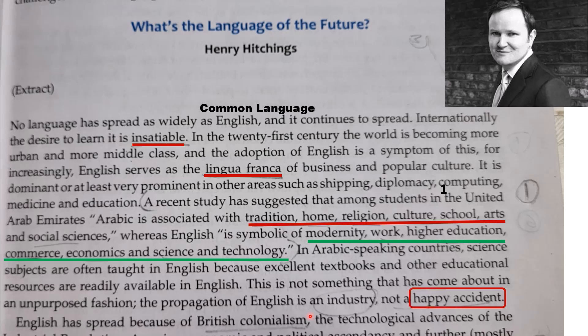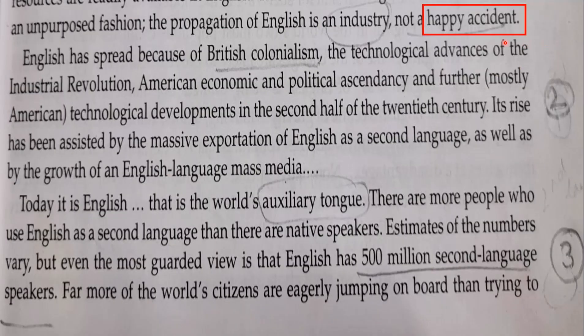Hope you understood the issues discussed in the first paragraph. They also describe English as a 'happy accident.' English has spread because of British colonialism. We all know that in India, before the 18th century — before the establishment of the East India Company — there was no English in our country. Only Arabic and Sanskrit were taught: Arabic in Madarsas and Sanskrit in Gurukulas. Ever since the Britishers entered our country in the name of trade, English entered our country. The second paragraph talks about the reason why English has spread, and how it has also become the auxiliary tongue.